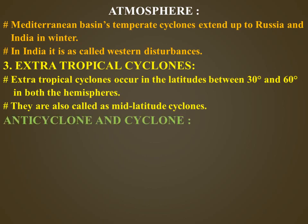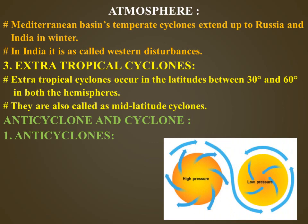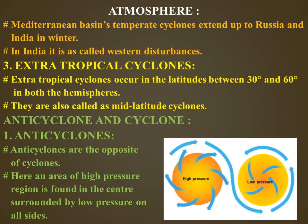Now we are going to learn about anti-cyclones. Anti-cyclones are the opposite of cyclones. They have an area of high pressure in the center, surrounded by low pressure on all sides. The wind from the high pressure region moves outward to low pressure regions in a spiral form. Anti-cyclones are often accompanied by cold and heat waves.